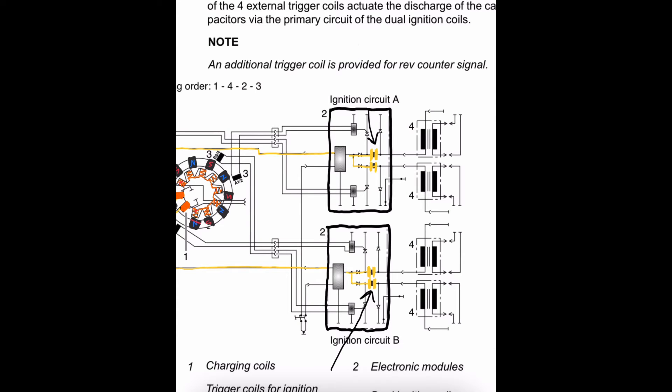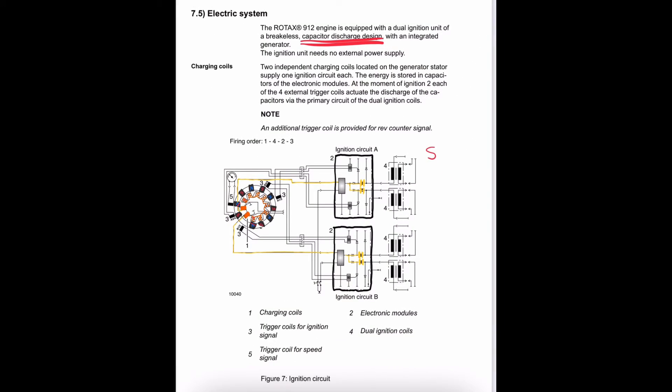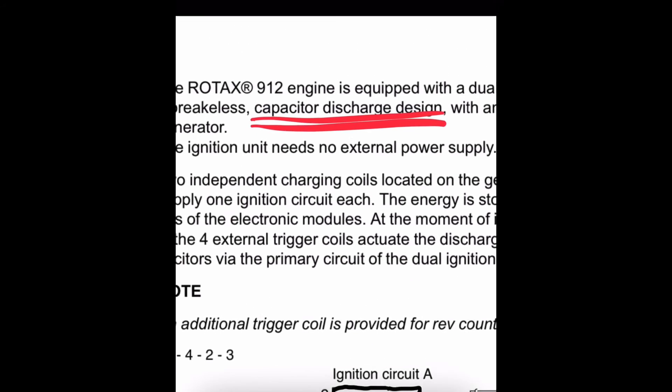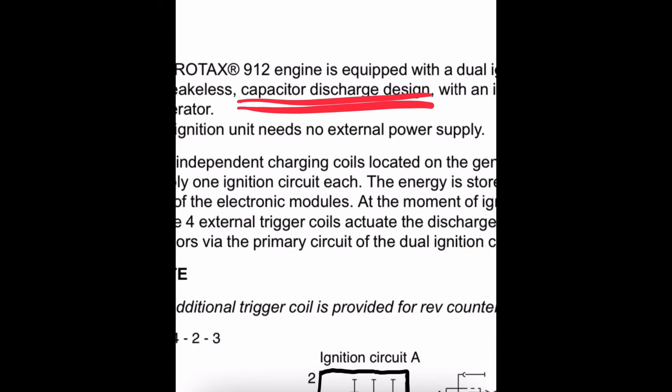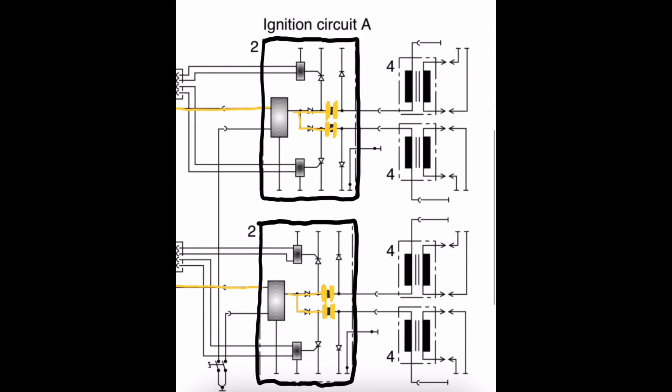So, we have the capacitors that are storing the electrical current that's being sent to them by the charging coils. And if we go back to the very beginning, where we read the description of the ignition system, it is a capacitor discharge design.